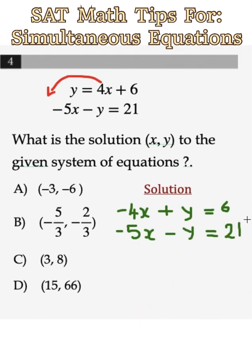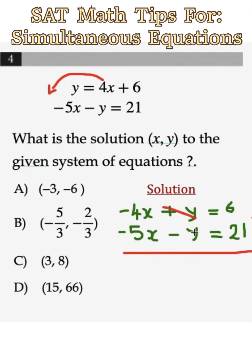When you add the two equations, notice that plus y cancels minus y. Then minus 4x plus minus 5x will give minus 9x, which is 6 plus 21, 27.